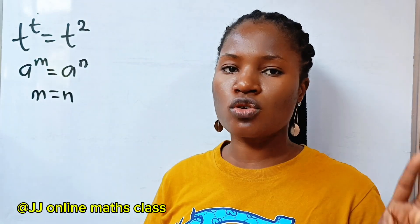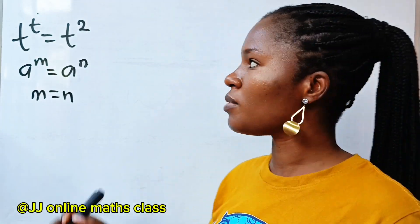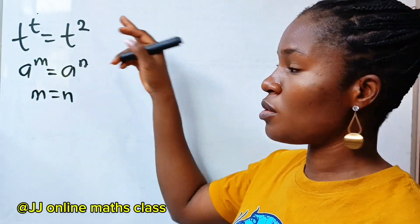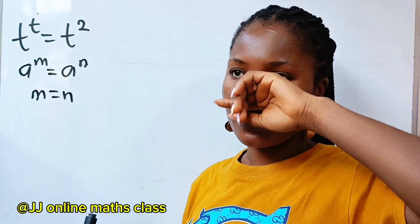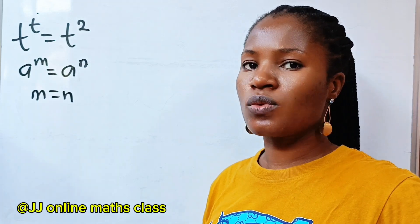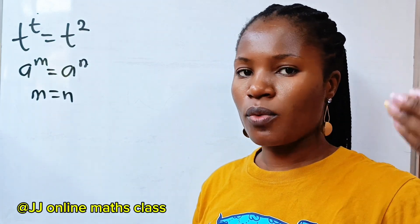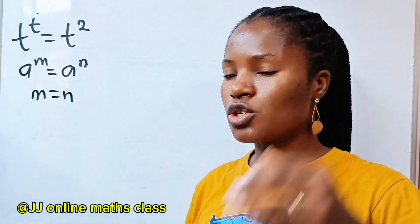But there are two values of t because t is raised to the power of 2. So how do we get the next one without guessing?